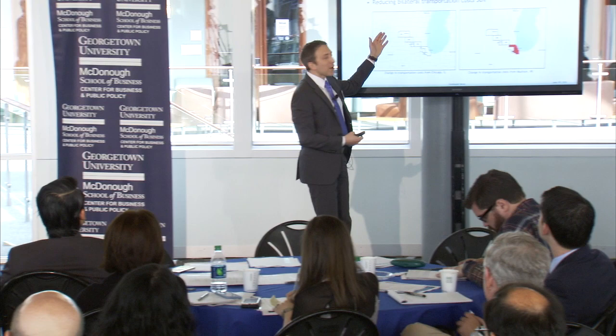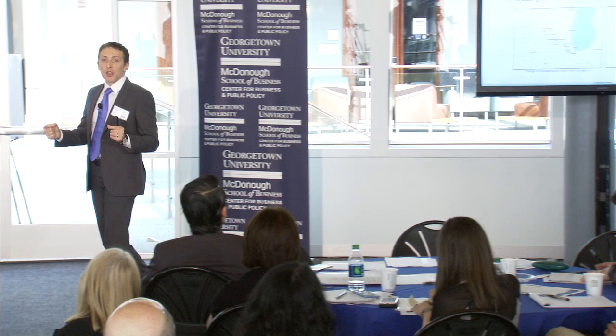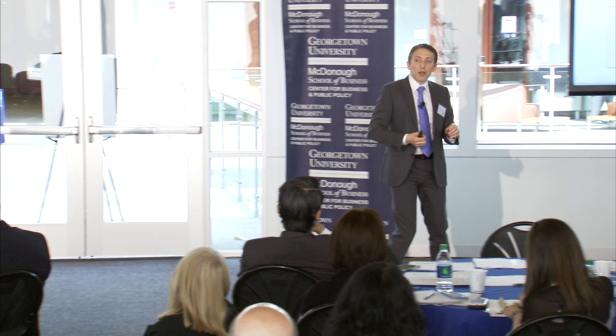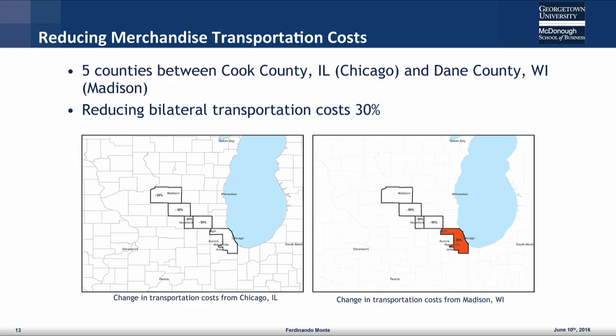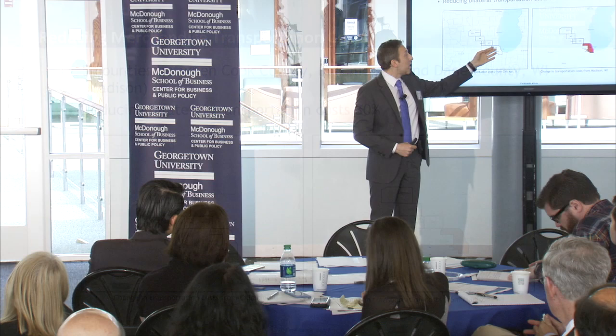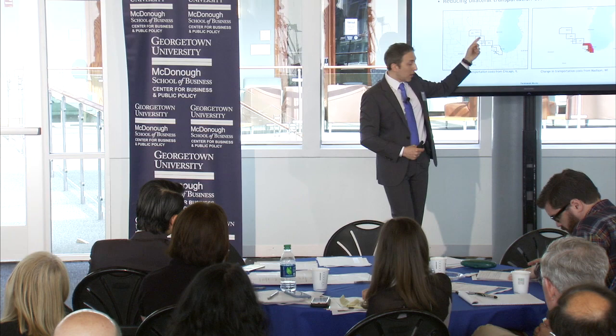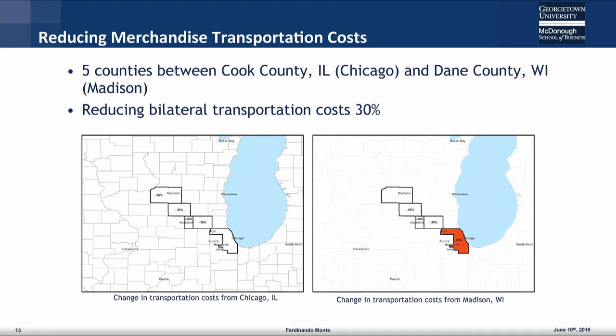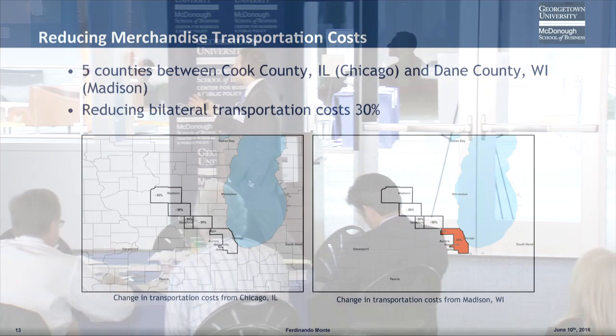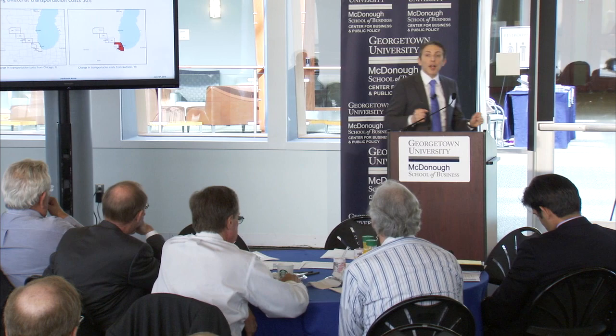Really what I'm doing is reducing bilateral transportation costs between any two counties on this line. What goes into the model is: if you are a producer in Chicago, it's going to be 30% less expensive to ship stuff to counties along the line; and if you live in Madison, it's going to be 30% less expensive to ship stuff along the line. For brevity I'm going to say things like 'along the line' or 'along the rail,' but this is not really exclusively about rail — I'm just reducing bilateral transportation costs for merchandise. That's what I'm doing in the model.